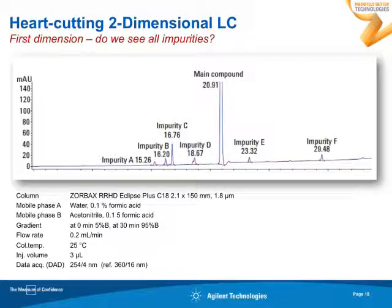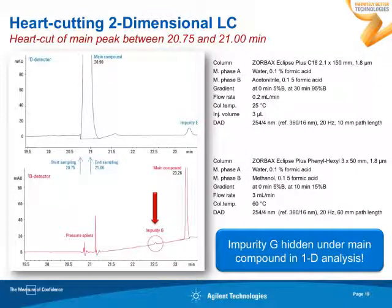Here's a nice example showing the power of heart-cutting 2D LC. A pharmaceutical impurity compound — the main compound with six identified impurities — was already analyzed with sub-2-micron particle columns on a rather long column with high resolution. However, doing heart-cutting 2D LC by cutting out the main peak and analyzing it on a column with different selectivity — a phenyl hexyl column instead of a C18 — revealed a surprise: something underneath that big peak was now nicely separated and identified as another impurity in the sample. This illustrates how beneficial 2D LC can be to not miss any compound.